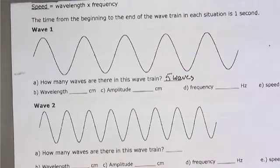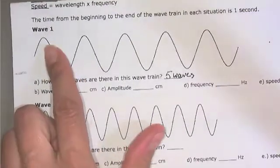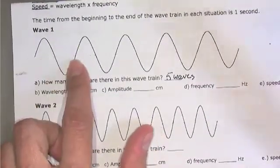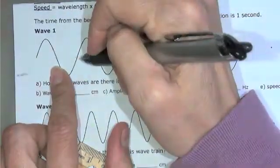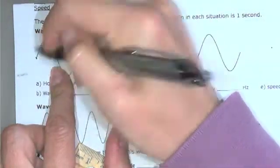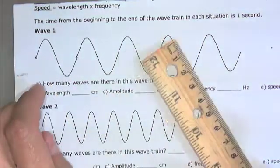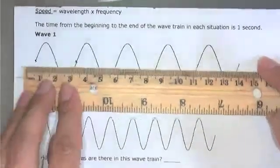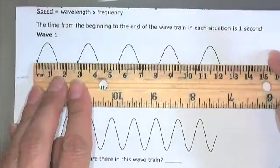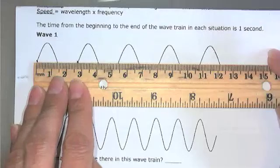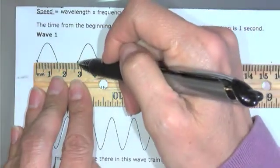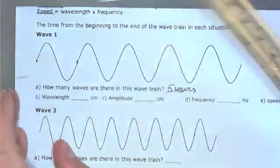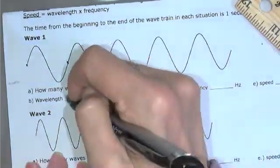The next thing is wavelength. There are a couple of different ways you can measure wavelength. We're going to measure them in centimeters. You can measure them peak to peak, or you can measure them from the beginning of one wave to the end of the other. Starting at zero, that looks to be about 2.7 centimeters.